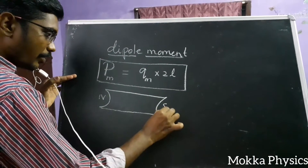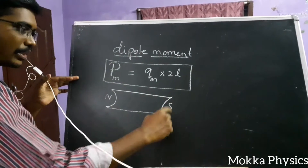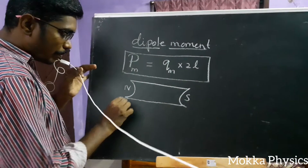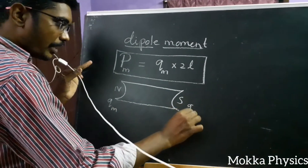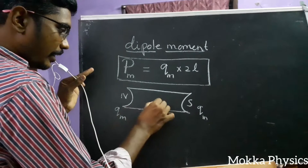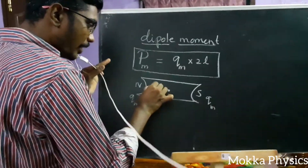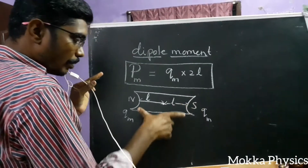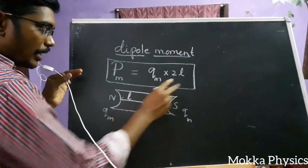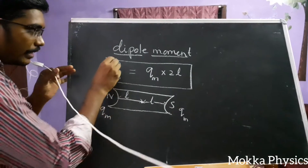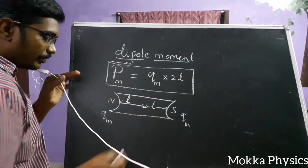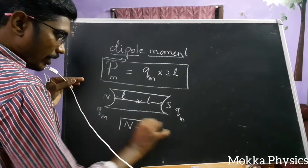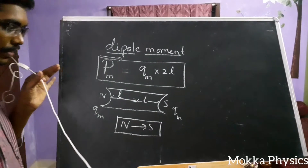This is the North Pole and this is the South Pole. You can see the magnetic strength of a magnet. The pole strength is QM. If we connect the center, this is L distance, and the total is 2L distance. You can express this as a vector. The direction of the magnetic moment acts from North to South.